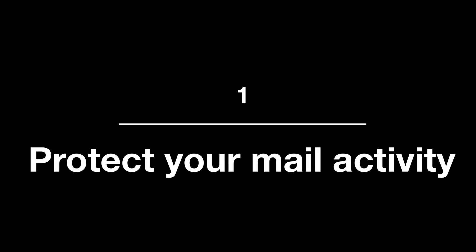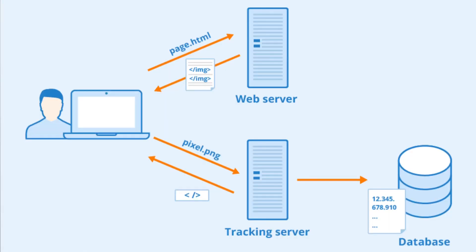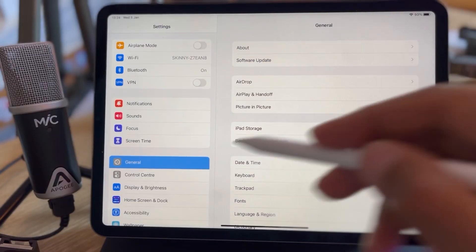Once that's out of the way, let's crack straight into tip number one: protecting your mail activity. Companies and advertisers that send you email can acquire certain information about your activity in the mail app — they can learn if and when you read a specific email and even determine your location. They often do this through a tracking pixel, a remote invisible image that calls back to the sender's server when you open an email, telling them exactly when you opened it, your IP, your location, and more. iOS 15 and iPadOS 15 introduce a privacy feature called Protect Mail Activity that can stop this.